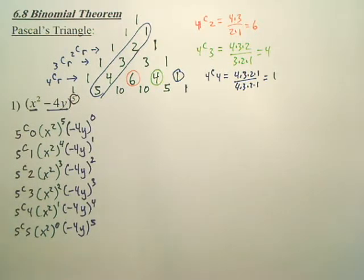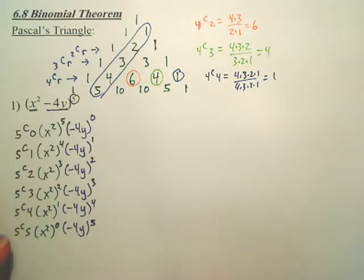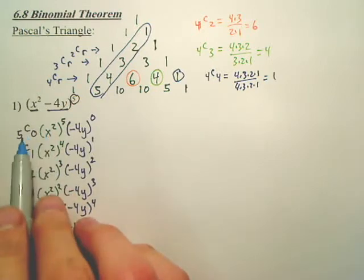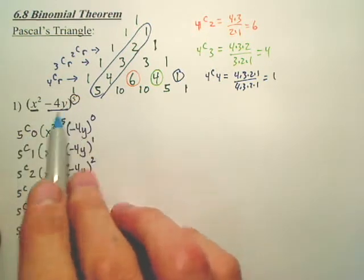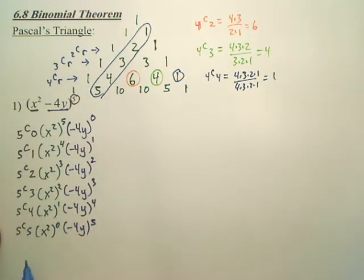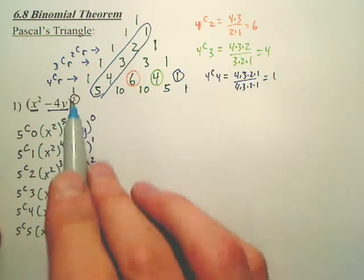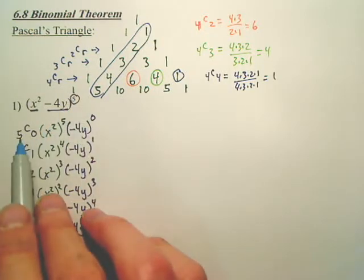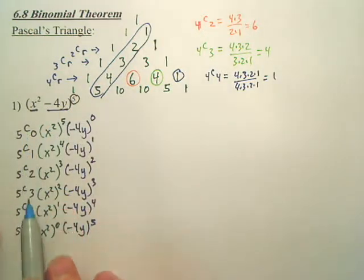This is actually somewhat organized and easier to keep from making mistakes than to foil a whole bunch. Again, this is the power — you go by combinations from zero to five. If that was a 4, you'd go 4C0 all the way to 4C4.